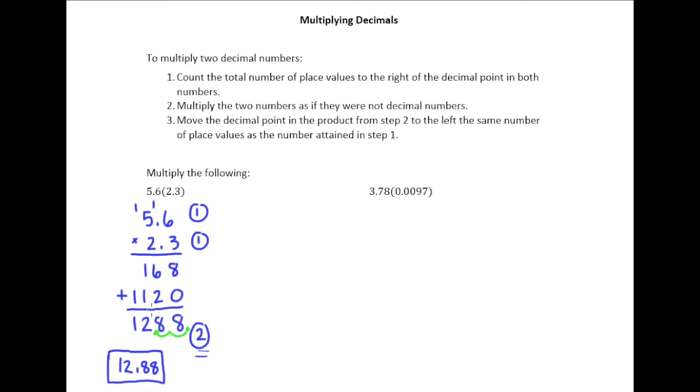Alright, let's put this into practice with the next example. Now look at this one, we've got 3.78 times 0.0097. Back in chapter one, when we learned how to multiply, one of the things that we said was we want to put the number with the least number of digits on bottom.